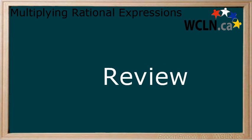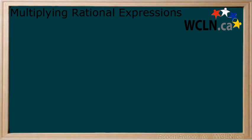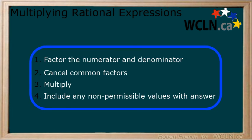In this lesson, you learned about multiplying rational expressions together. There are 4 steps to the process, and your non-permissible values come from any cancelled terms in step 2 and after you've multiplied your terms together.